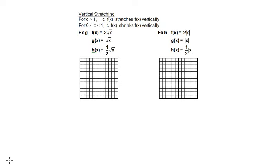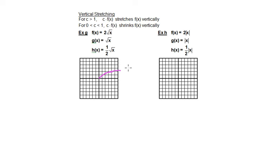The next transformation we're going to do is stretching. Vertical stretching is a little more intuitive, so let's begin with the basic function g of x, which is equal to the square root of x. We'll go ahead and graph that — the pink line reflects our original square root function, which we've labeled g of x.